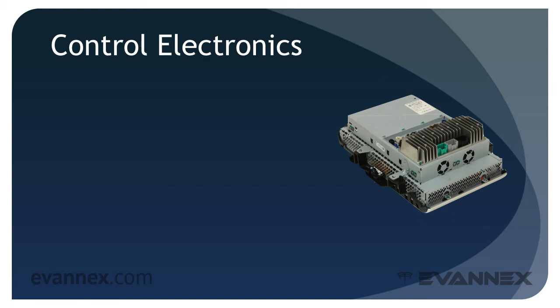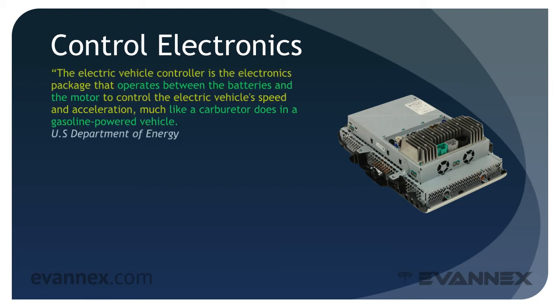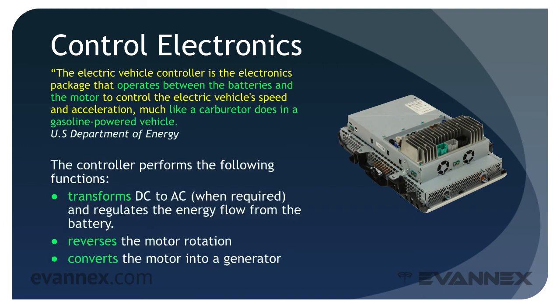The U.S. Department of Energy describes the control electronics for an EV in the following manner: the electric vehicle controller is the electronics package that operates between the batteries and the motor to control the electric vehicle's speed and acceleration, much like a carburetor does in an older gasoline-powered vehicle. The controller performs the following functions: it transforms DC current from the battery into AC and regulates the energy flow from the battery; it reverses the motor rotation, which is necessary so the vehicle can go in reverse; and it converts the motor into a generator so that kinetic energy can be used to recharge the battery during regenerative braking.